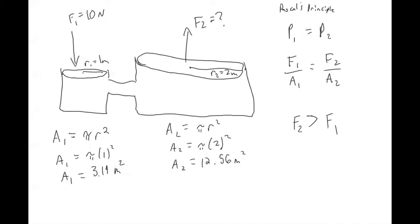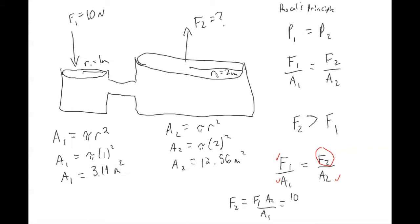So now we have our areas. We're given F1, area one, and area two, and what we're solving for is force two. If we rearrange the equation, we get force two equals F1 times area two over area one. Plugging in our numbers: 10 times 12.56 over 3.14, which gives us 40 newtons.